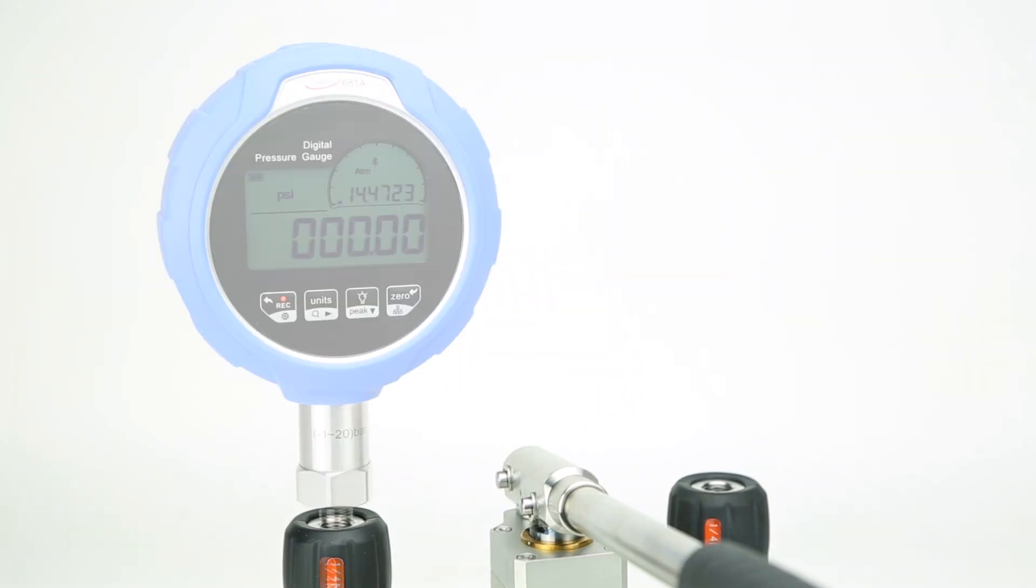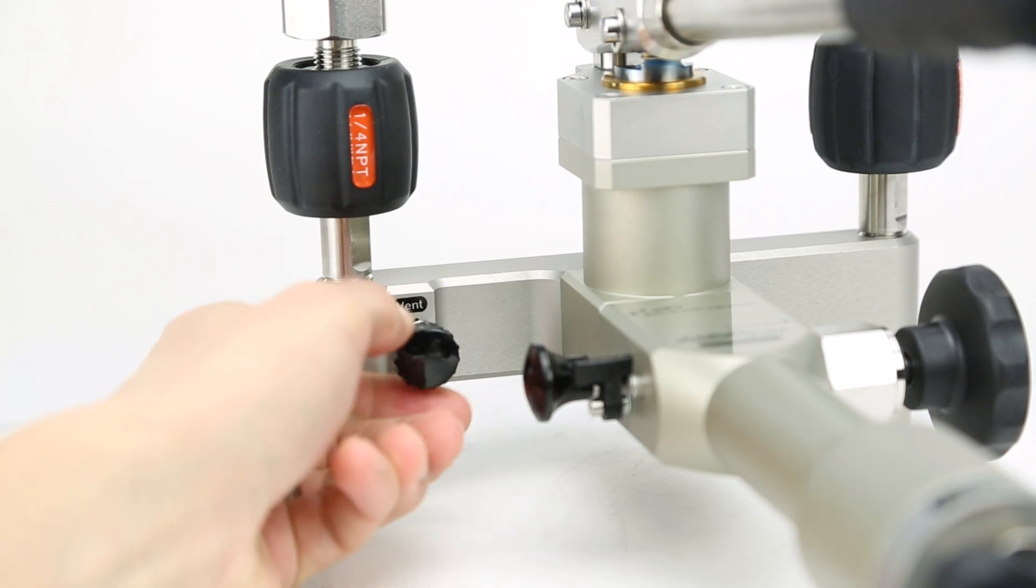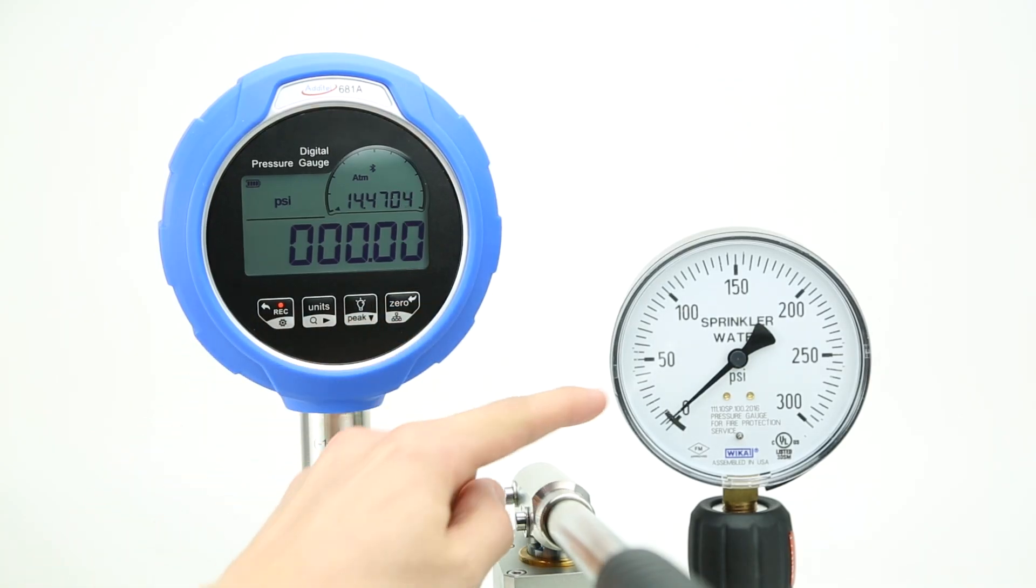To begin, connect both the reference and the DUT to the pump, and vent any pressure built up inside. While the pump is vented, you can zero the reference gauge and record the dial gauge pressure as your first calibration point.